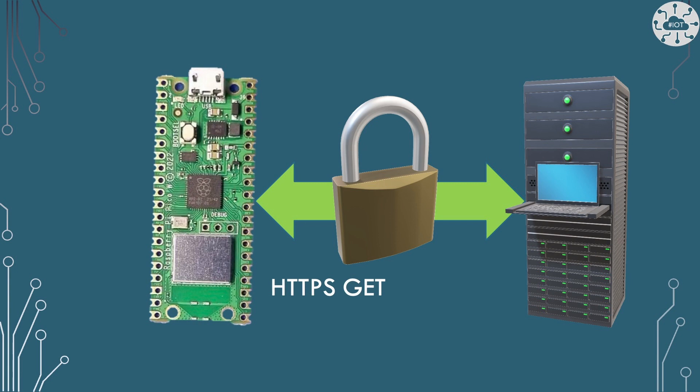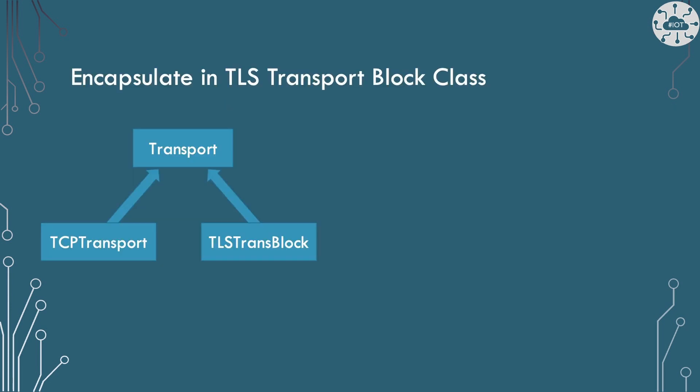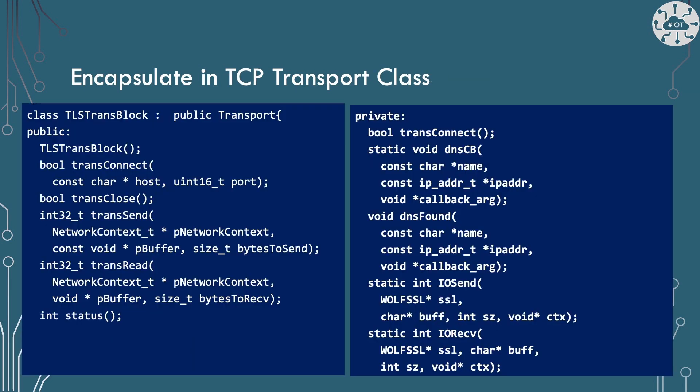The example is going to do an HTTPS GET to a web page from my company website. To do this we go through the same socket process as last time, just adding security into those steps. I'm placing these functions into a transport layer as a C++ class that looks to the outside world just like the insecure TCP transport from last time, with the same basic methods: open a socket, send data, read data, and close a socket.